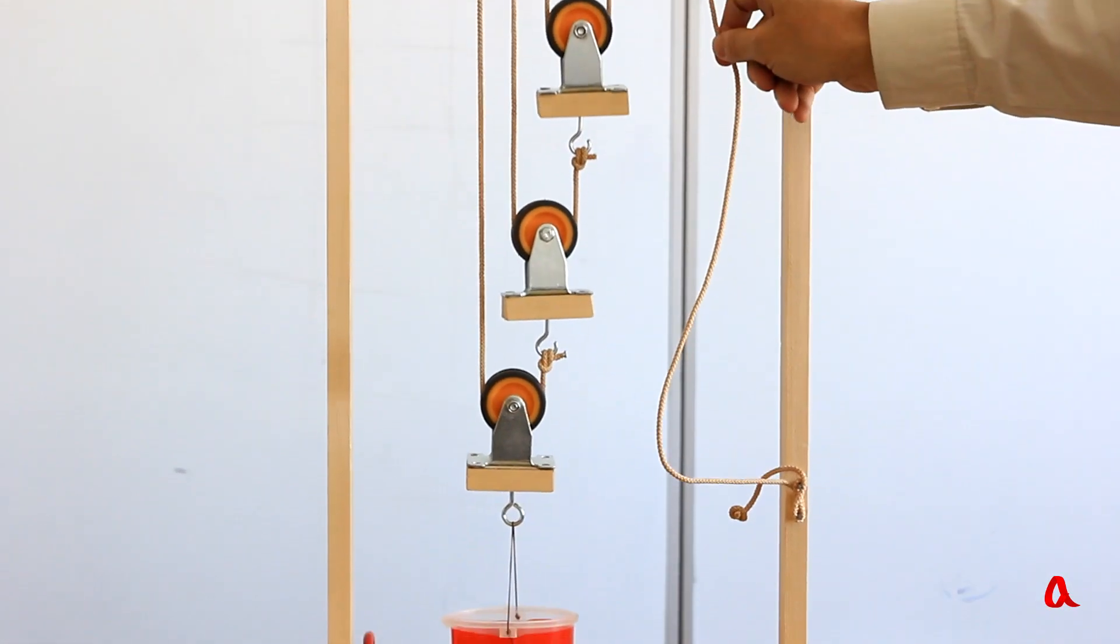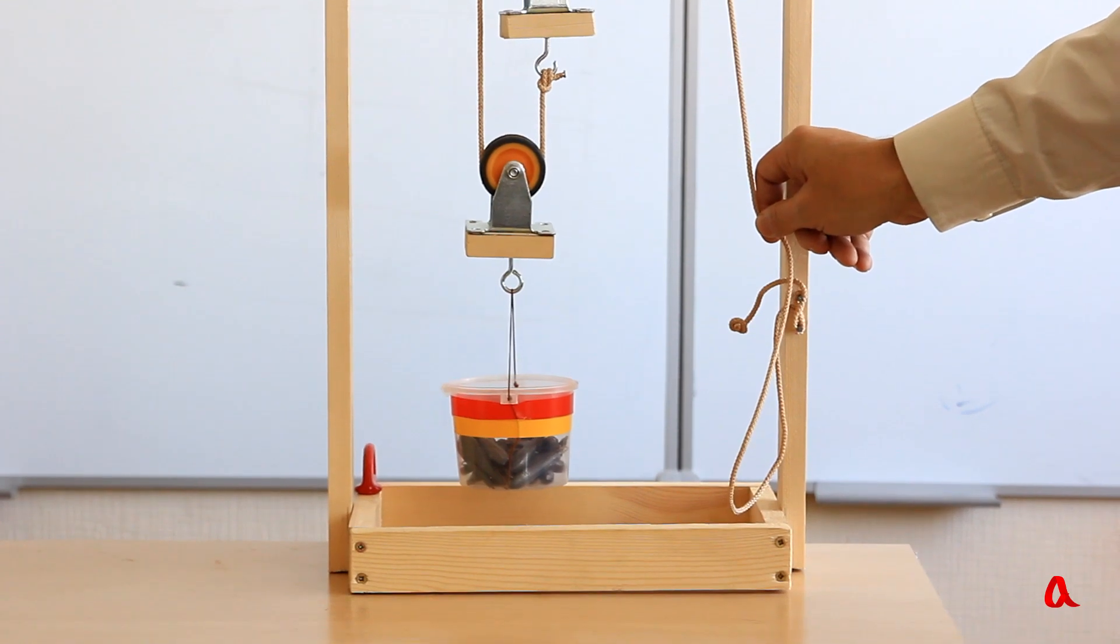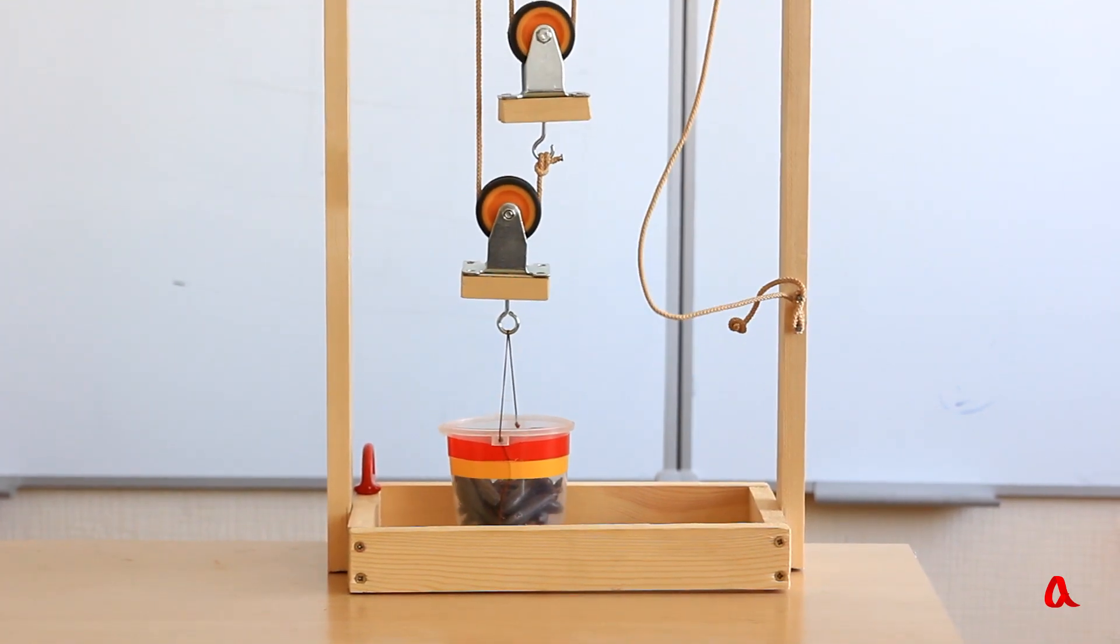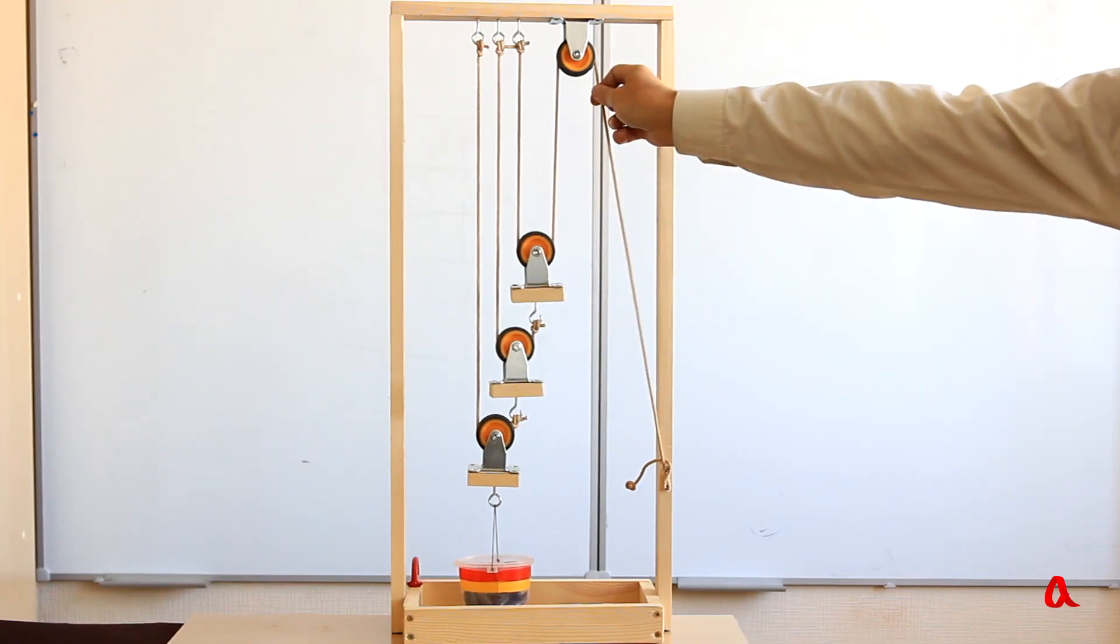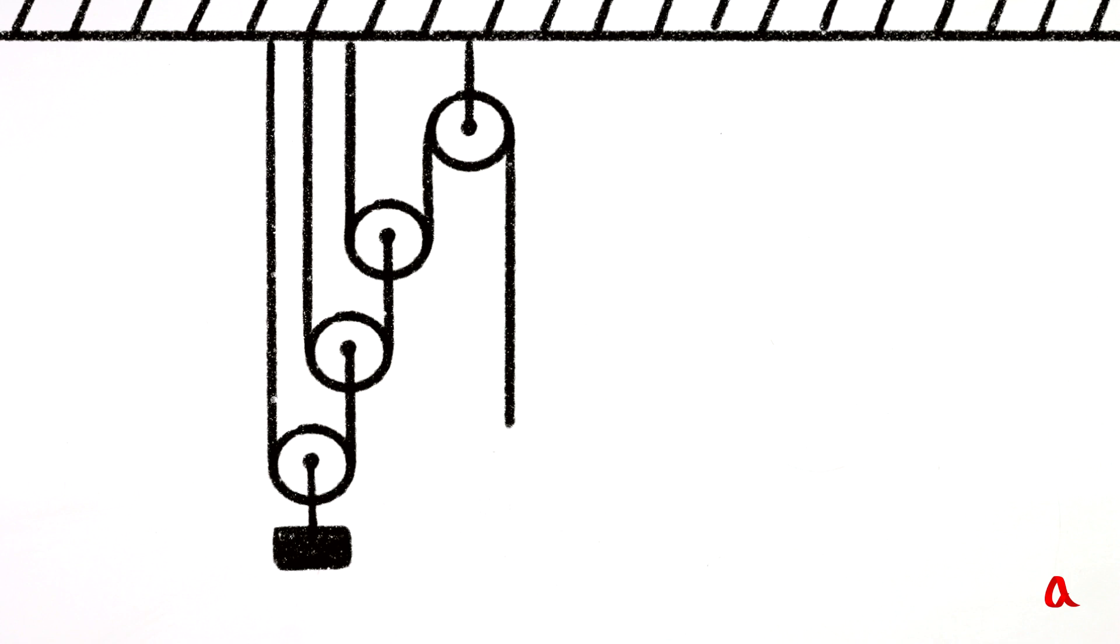Please note what long distance a hand has to cover to raise the load to quite a short distance. So the distance loss in this case is quite considerable, even though it allows a noticeable mechanical advantage. Let us calculate mechanical advantage for this type of block and tackle construction.